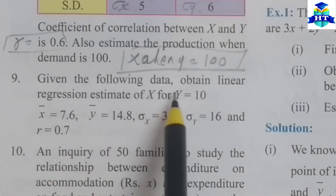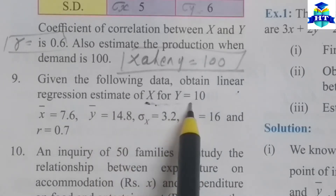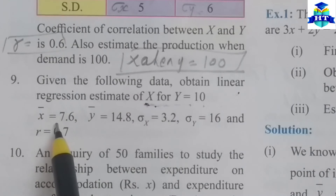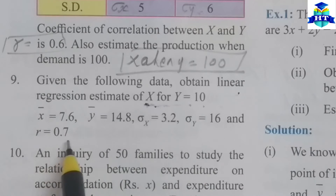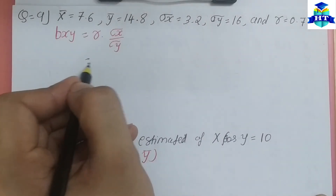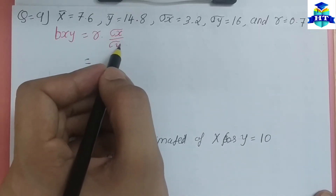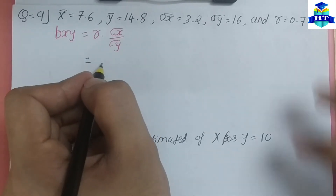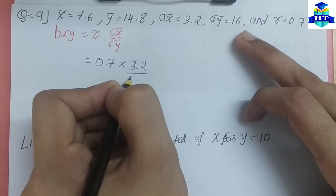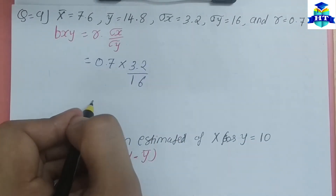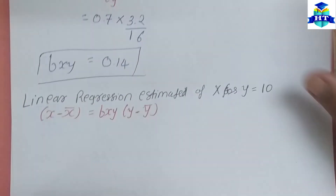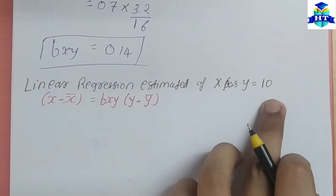Question number 9: given the following data, obtain the linear regression equation X on Y. We have X on Y, X when Y is given, arithmetic mean of X, standard deviation of X is 3.2, standard deviation of Y is 16, and R is 0.7. We can easily find B X on Y: R times (σx / σy) equals 0.7 times (3.2 / 16), so B X on Y equals 0.14.